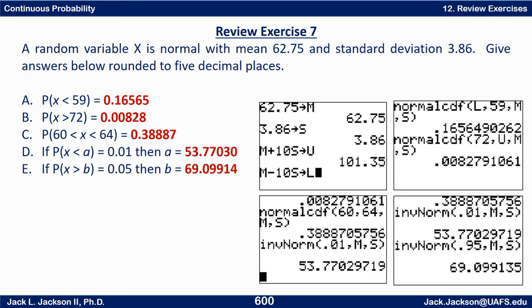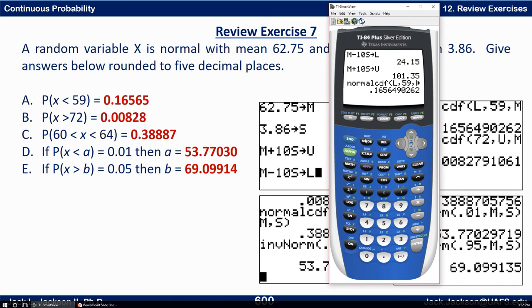I can just do second enter and bring that back up, then change a couple things. The next one is from 72 up, so the lower limit is 72. The upper limit is infinity, but I'll put in U instead. The stored M and S give me my normal CDF, the probability for the second one.